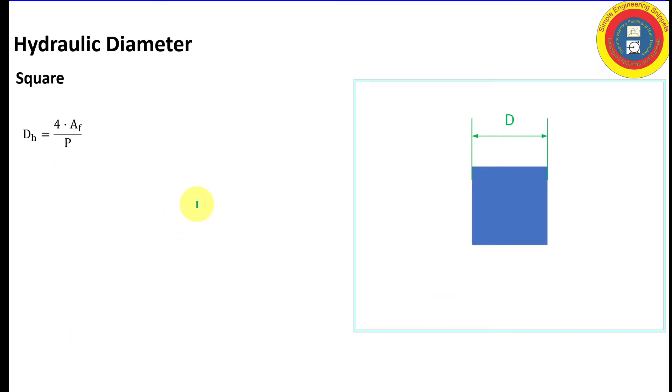Now let's move on to a square of length, each side of length d. The flow area is d squared. The wetted perimeter is 4 times d. Plugging that into our hydraulic diameter equation, the hydraulic diameter of a perfect square is the length of one side. In this example d.